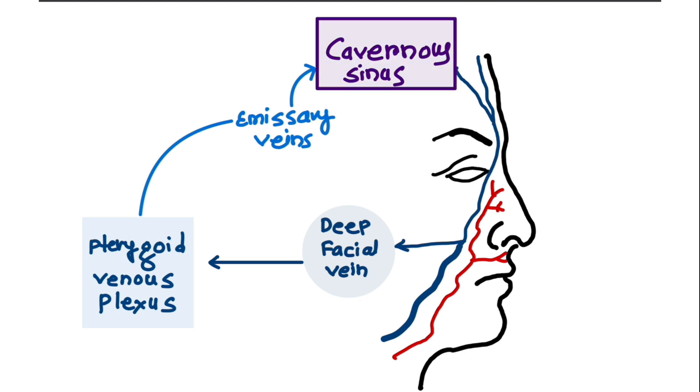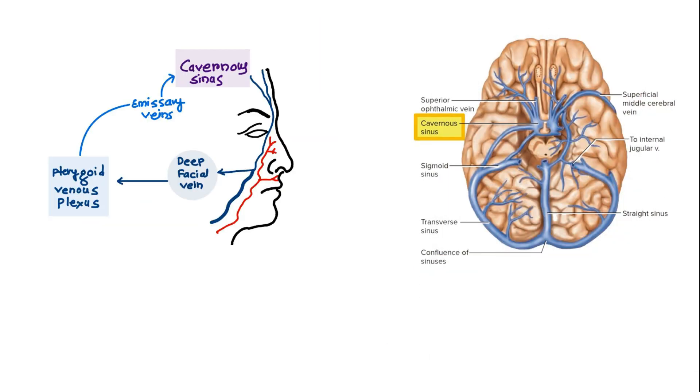And we know that cavernous sinus lies within the cranial cavity and is a major conduit of venous drainage from the brain.